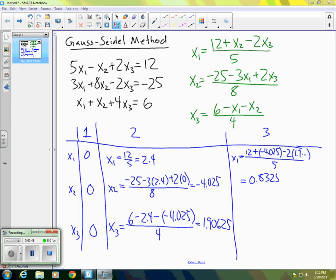Now when we go on to find our third x2, we'll go ahead and use that 0.8325 value that we just obtained. So we'll have negative 25 minus 3 times 0.8325, and then plus two times that value we had of x3, which was 1.9, and that's all divided by 8. And the result of that is negative 2.960625.